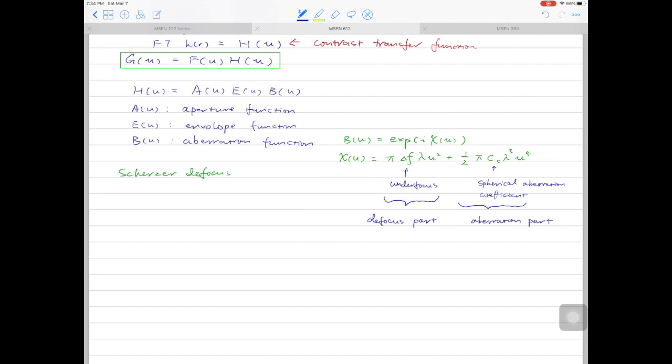Scherzer defocus is written down as delta f sch equal to minus 1.2 Cs lambda to the power of half. What Scherzer defocus does is the contrast transfer function can be optimized by balancing the effect of spherical aberration against a particular negative value from Scherzer defocus. This is the best performance you can achieve in a conventional high-res TEM.